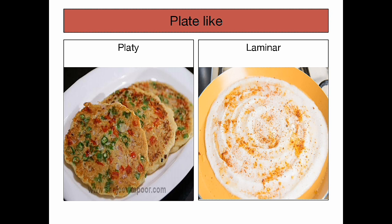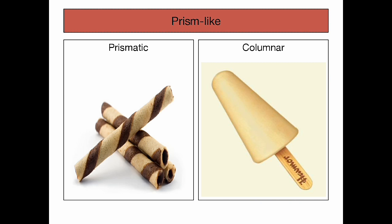Plate-like structures are divided into two types: platy and laminar. In platy, the horizontal layers are thick, and if they are thin, it is laminar. Consider dosa and uttapam — in the case of dosa, the horizontal layers are thin, and hence it is laminar. Since uttapam is thick, it is classified under platy. With the help of dosa and uttapam, we can see how plate-like structure appears in soil.